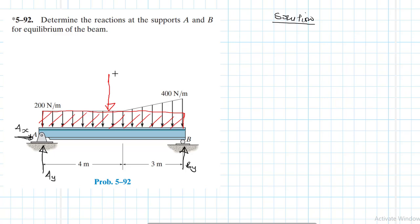So let me call this load P1. And P1 is going to be equal to base times height. What is my base? It's the length, which is seven meters. And what's my height is my load, which is 200 newtons per meter. Therefore, this gives me 1400 newtons.